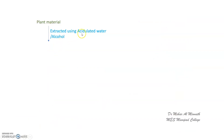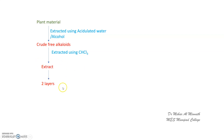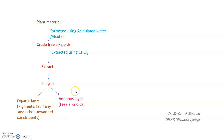In the third method, the plant material is extracted using acidulated water or alcohol. You shake the plant material in acidic water or alcohol so that the free alkaloids come out. This crude alkaloid solution is then extracted using chloroform. The extract has two layers: the organic layer containing fats, pigments, and other unwanted constituents, and the aqueous layer containing the free alkaloids.